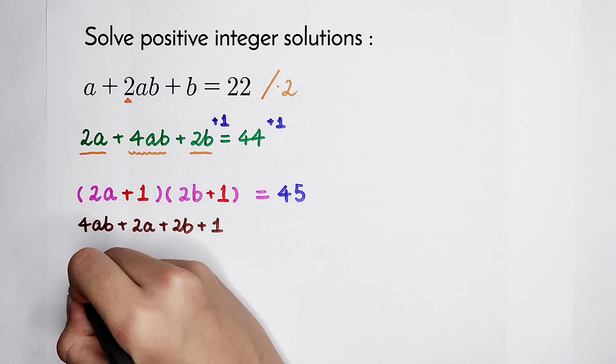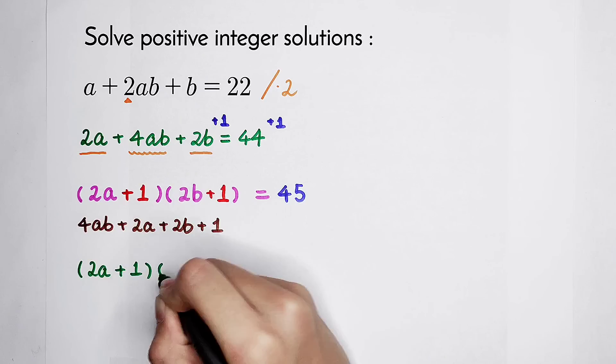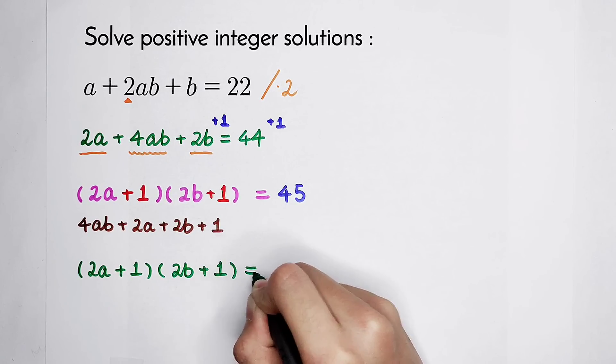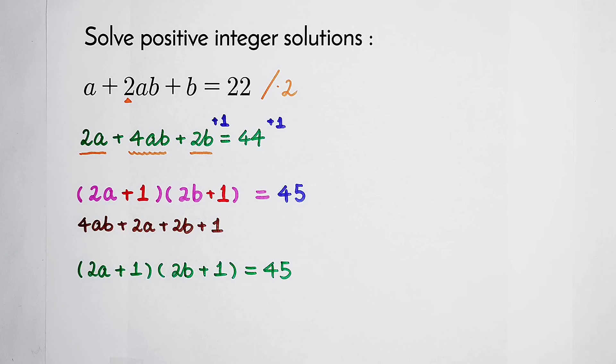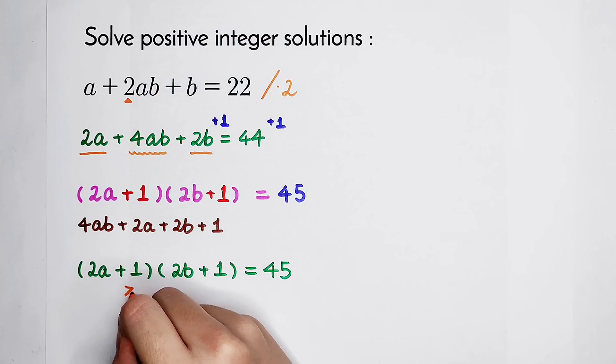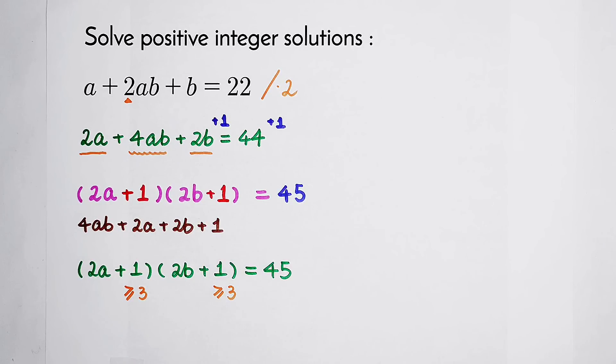And then the right side becomes 45. So now this equation becomes 2a plus 1 times 2b plus 1 equals 45. Because a and b are both positive integers, so 2a plus 1 is an integer, and it has to be greater or equal to 2 times 1 plus 1 is 3. 2b plus 1 is also greater or equal to 3.